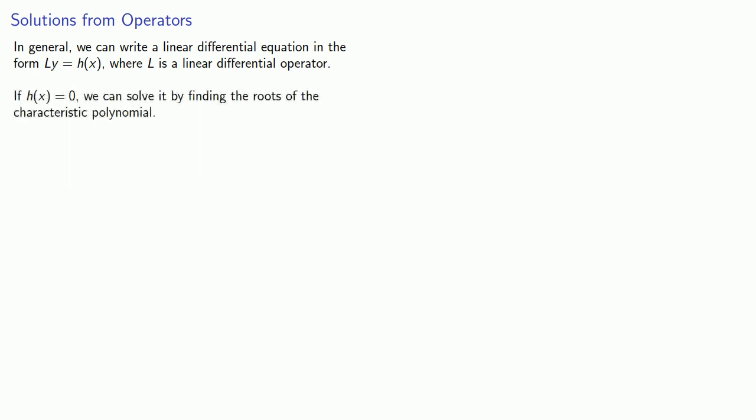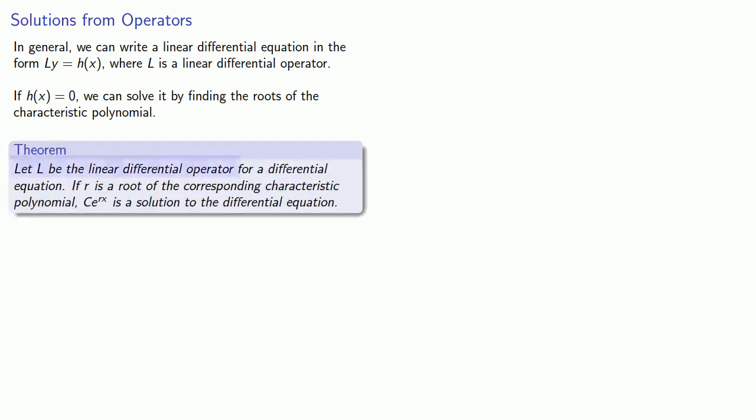If h(x) equals zero, we can solve it by finding the roots of the characteristic polynomial. If L is our linear differential operator and r is a root, then c*e^(rx) is a solution.